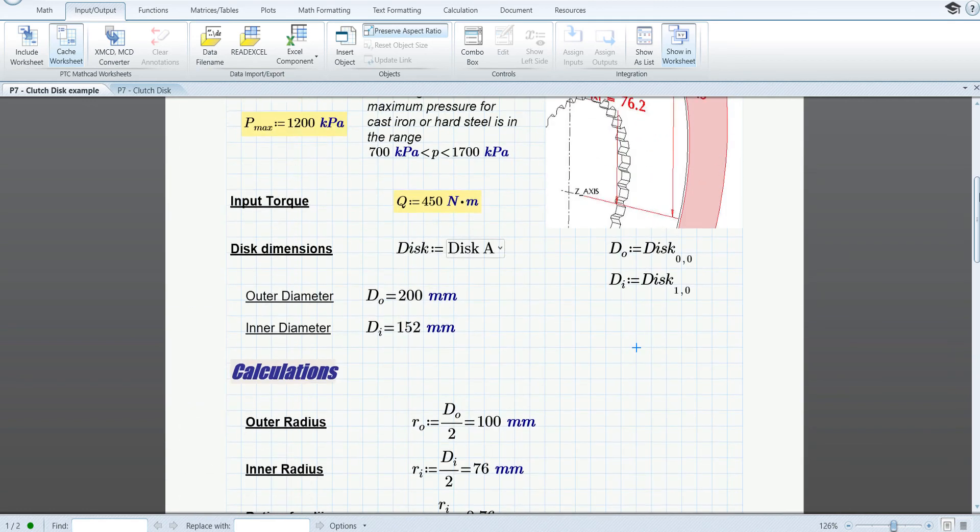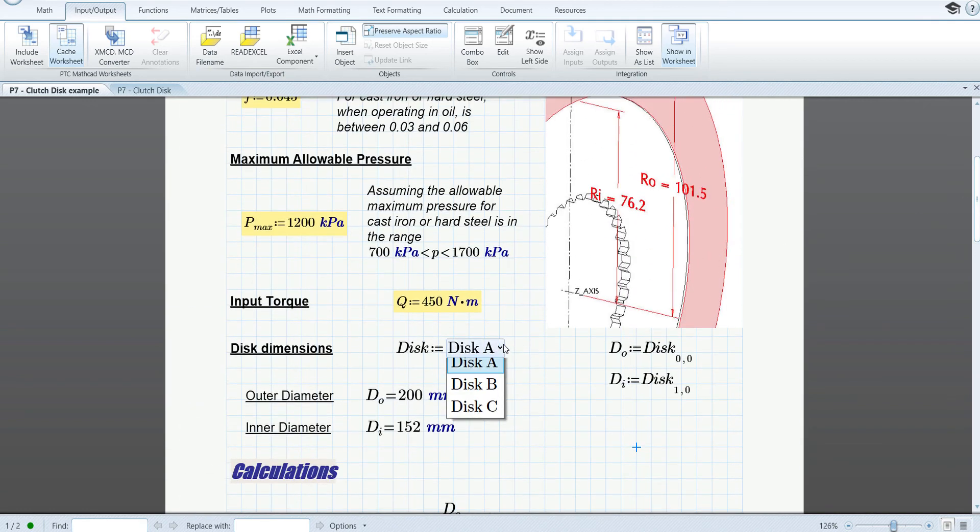Now, if we go down, we can see that number of pairs is five, plates is five. If we change this to B, you can see the outer and inner diameter change. If we change it to C, again, they change.